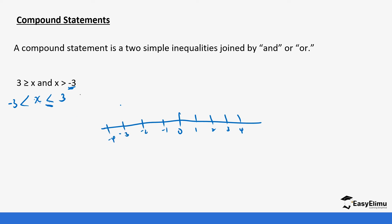On the number line, x is greater than negative 3 so it starts from there, and x is less than or equal to 3 so it goes up to 3. For the circles: negative 3 is not part of x, so we use an open circle; for 3, because of the equal sign, it is part of x so we use a filled circle. The values of x are all numbers between negative 3 and 3, excluding negative 3.